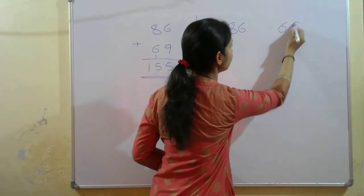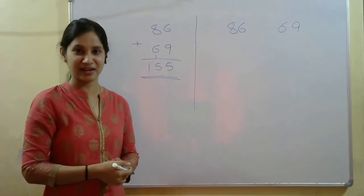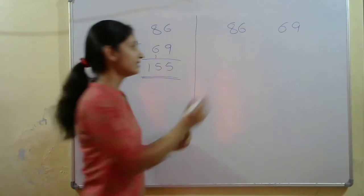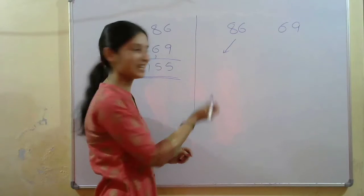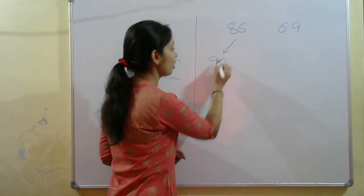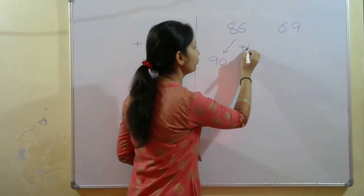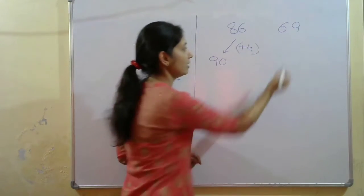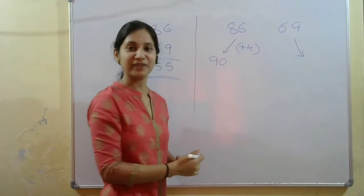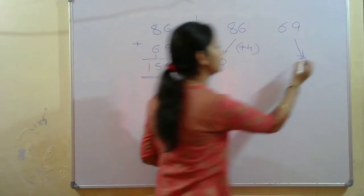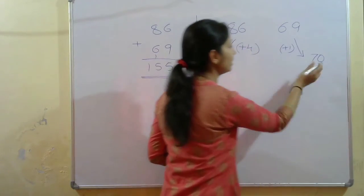Now let us solve using Vedic math tricks. For 86, the nearest multiple of 10 is 90 — you added 4 to get there. For 69, the nearest multiple of 10 is 70 — you added 1 to get 70.